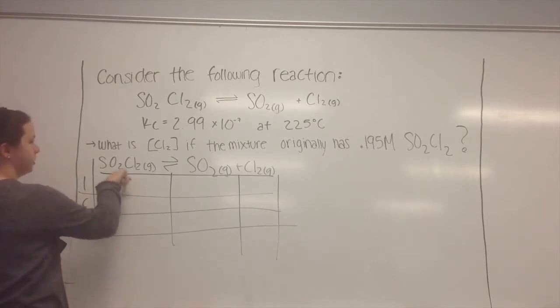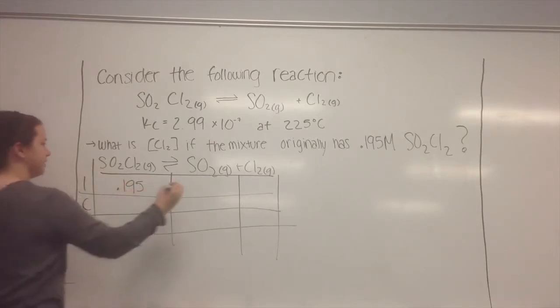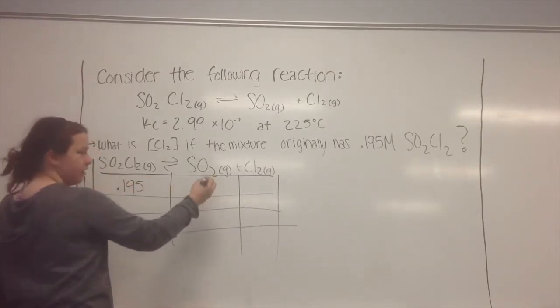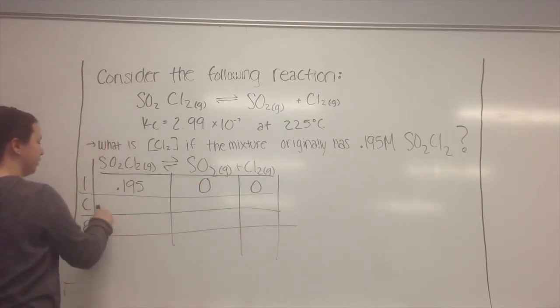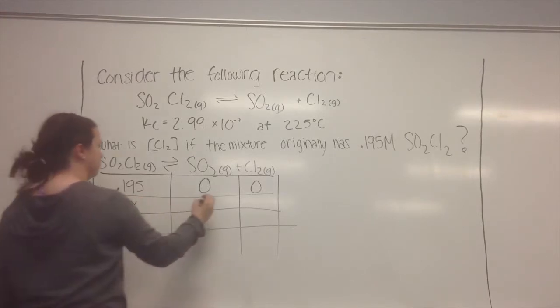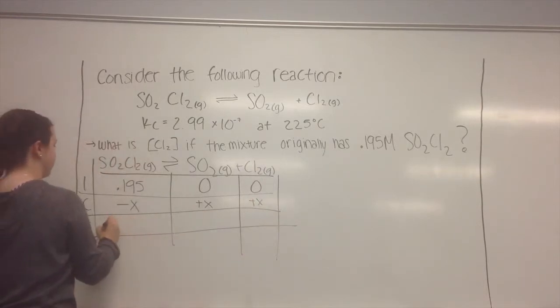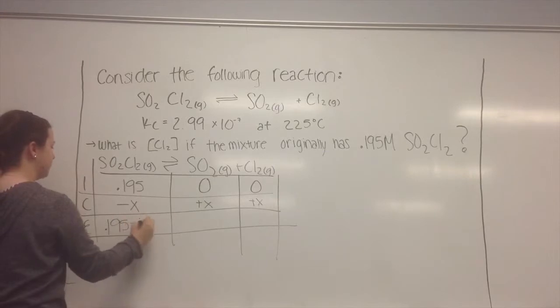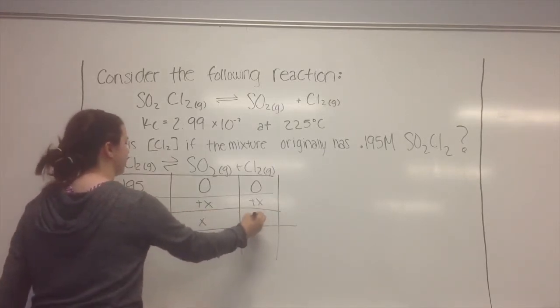Right here it says in the problem we start out with 0.195 molar of the SO2Cl2 gas. And since it doesn't say anything, we automatically assume that these are both zero. And then you want to go to your change. So this one is going to be minus X, plus X, plus X. And then down here for equilibrium it will be 0.195 minus X, zero plus X which will just be X, and X again.